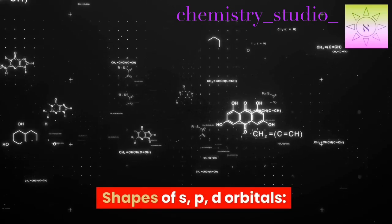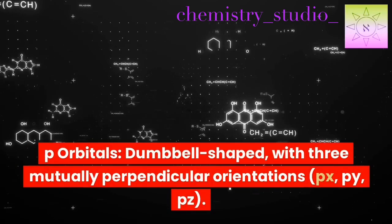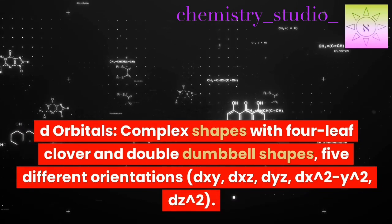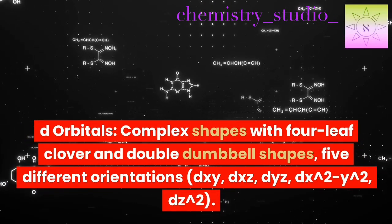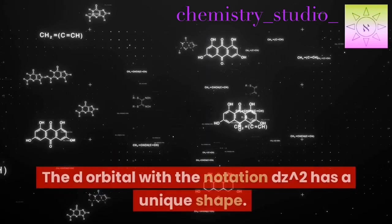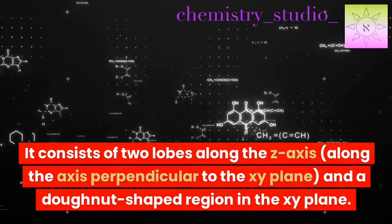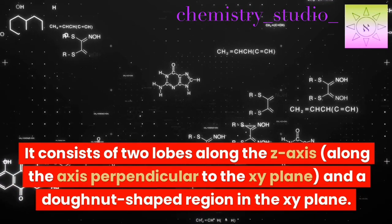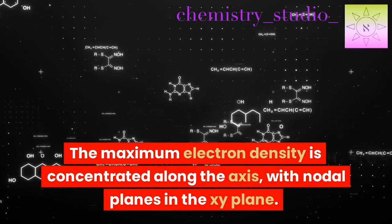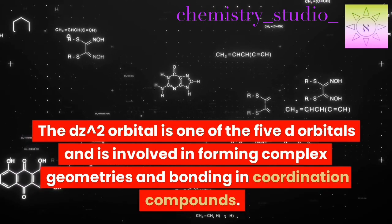Shapes of S, P, D orbitals. S orbital: spherical shape, centered around the nucleus. P orbitals: dumbbell-shaped, with three mutually perpendicular orientations — Px, Py, Pz. D orbitals: complex shapes with four-leaf clover and double-dumbbell shapes, five different orientations — Dxy, Dxz, Dyz, Dx²−y², Dz². The Dz² orbital consists of two lobes along the z-axis and a donut-shaped region in the x-y plane. The maximum electron density is concentrated along the z-axis, with nodal planes in the x-y plane. The Dz² orbital is one of the five d-orbitals involved in forming complex geometries and bonding in coordination compounds.